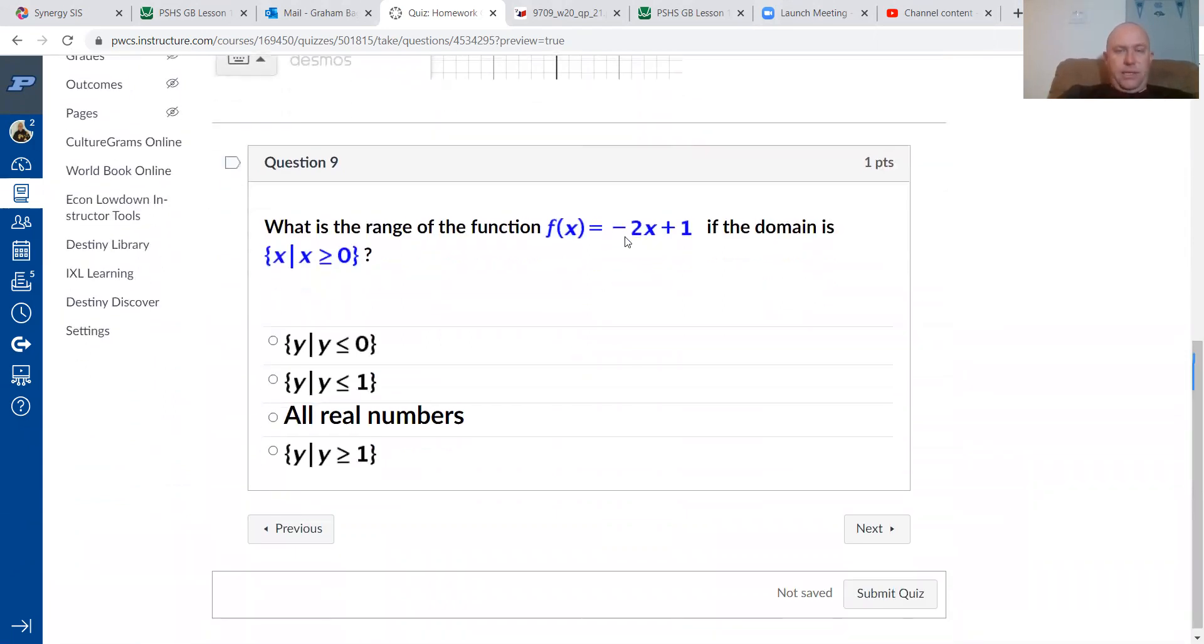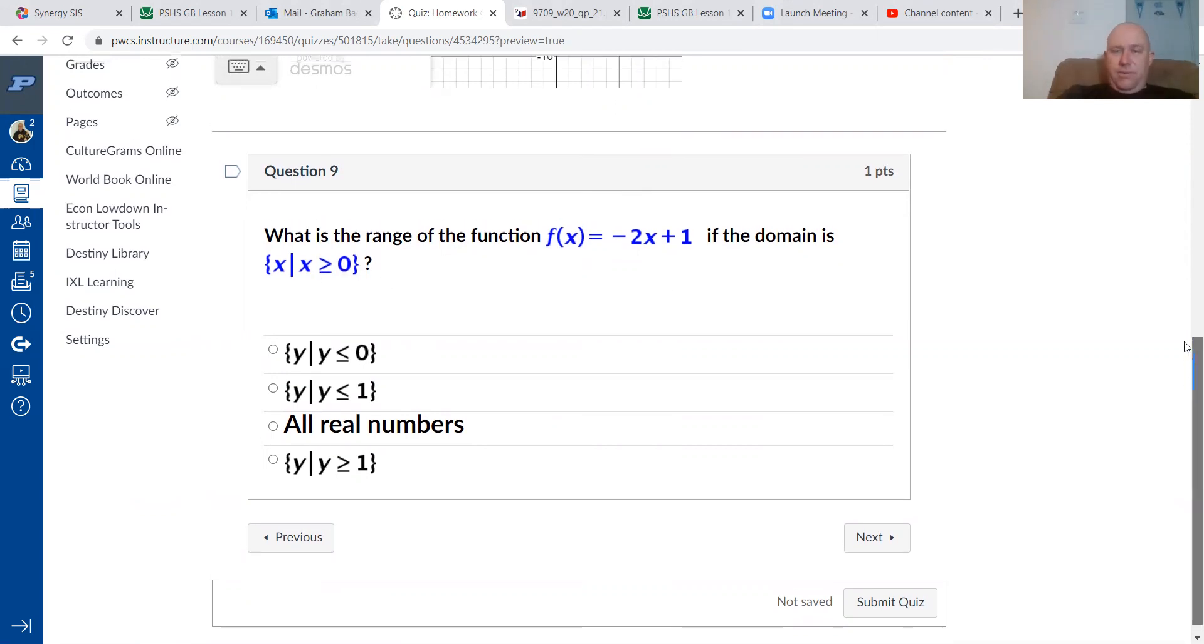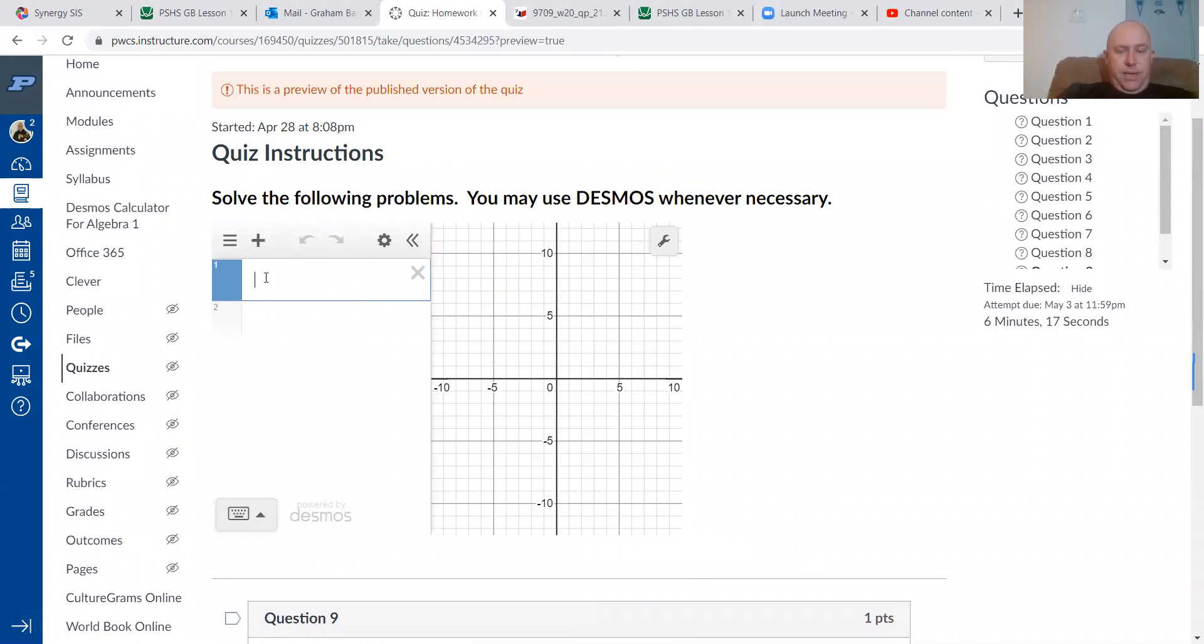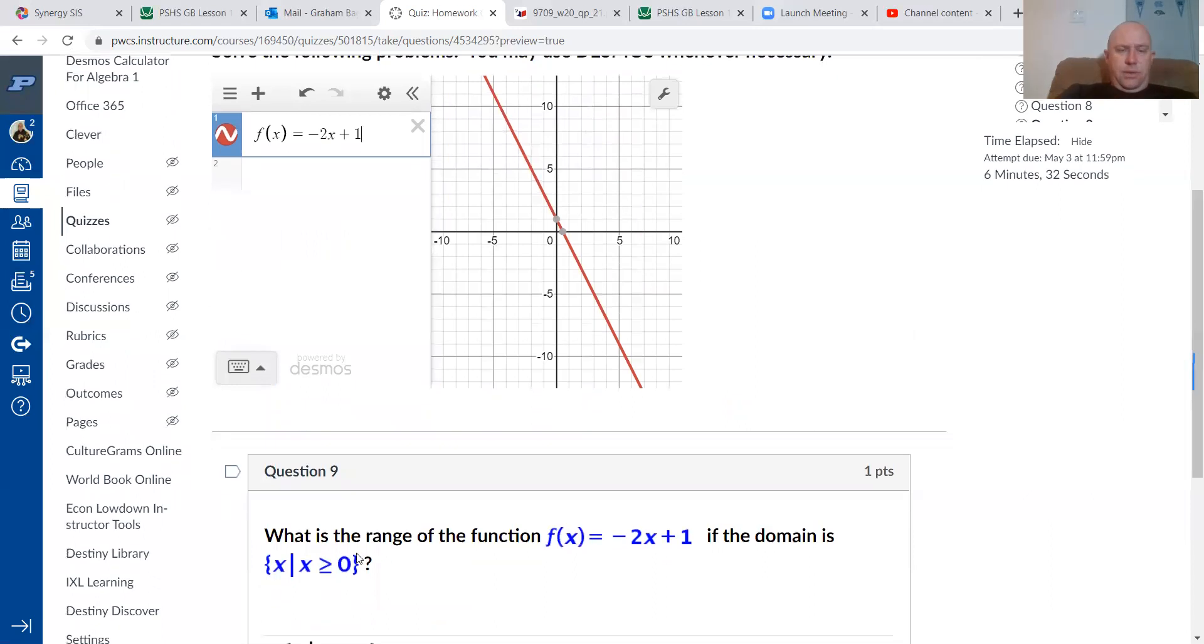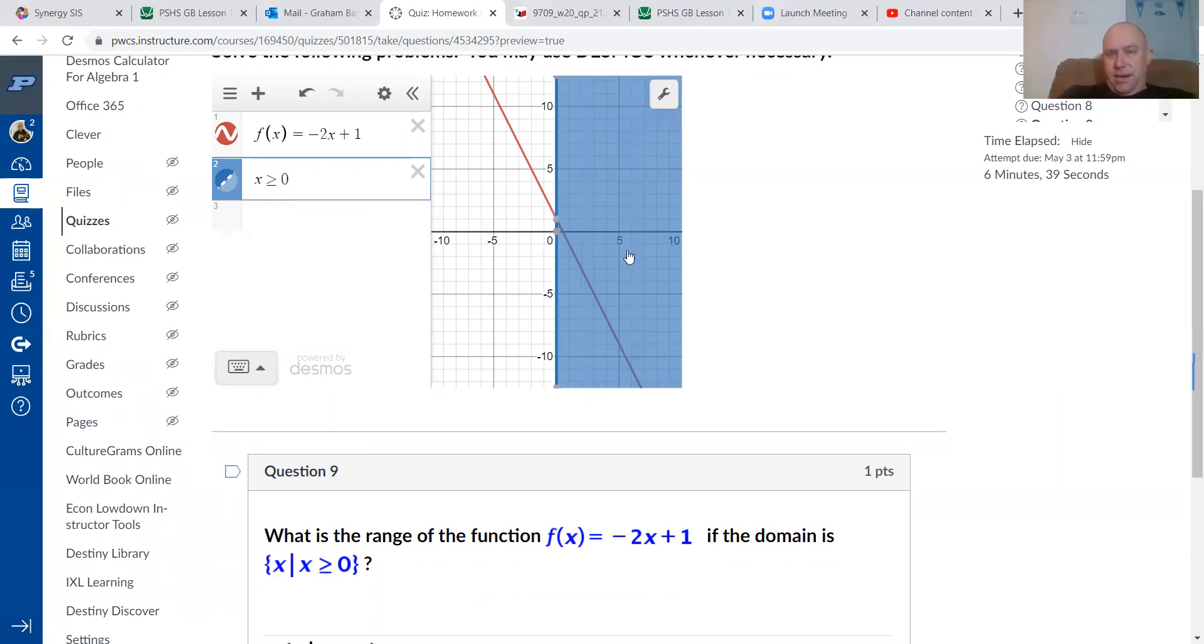Question 9. f(x) equals negative 2x plus 1. If the domain is x is greater than or equal to 0. Now, this one is a little sneaky. Now, notice for this one, they did not give us a picture. So if they do not give us a picture, you would probably kind of want to look to see what this actually looks like. So let me go ahead and type that one in. There we go. Negative 2x plus 1. It also says when x is greater than or equal to 0.